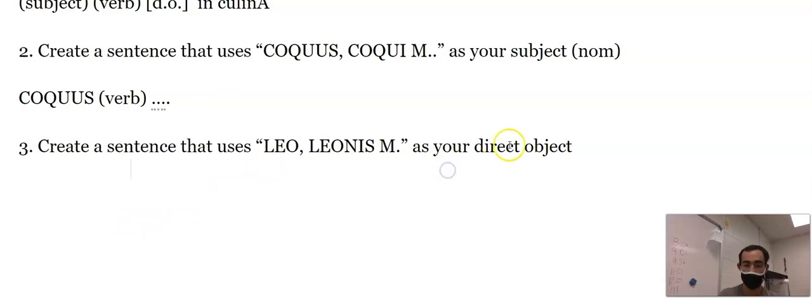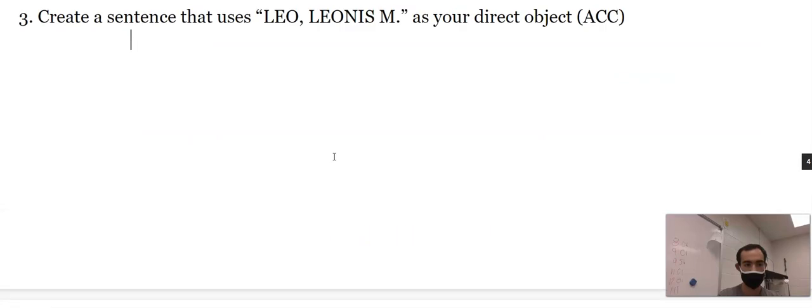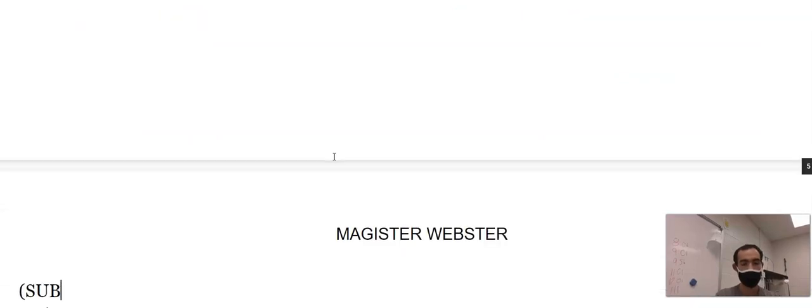Leo as your direct object. That's going to be accusative. That's going to be subject. What just happened? So I need subject, verb, and then direct object. That's 'leonem.' So something has to happen to the lion. By something else. What that is, is up to you.